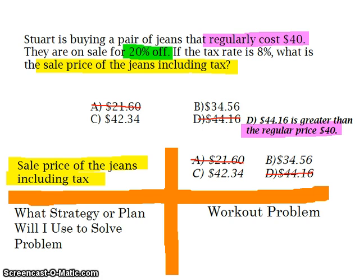We're only left with two answer choices, which is good. Whenever you're taking an assessment, it is always good to try to cross out as many wrong answer choices as possible. That way, whenever you get your answer, if it matches an answer choice you've already marked out, you know that you've done something wrong and you just need to go back, figure out your mistake, and correct it in order to get the right answer.